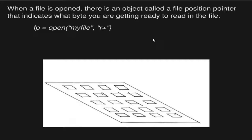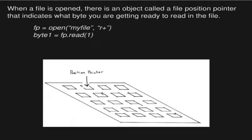When a file is actually opened, we have an object called a file position pointer. What that tells us is exactly what byte you are getting ready to read in the file. If I imagine my file with individual bytes listed, when I do an fp open to read and write, as soon as I open that file, the position pointer is set at the very first byte — the beginning of the file. As I make a read call — fp read one byte — then the file pointer gets incremented down to the second byte in the file.